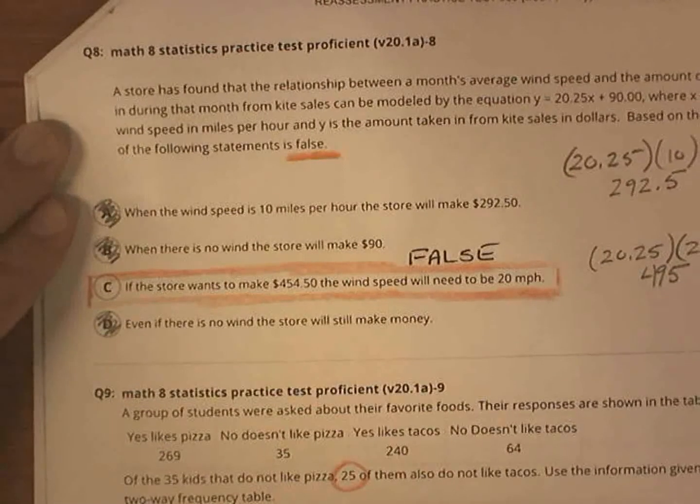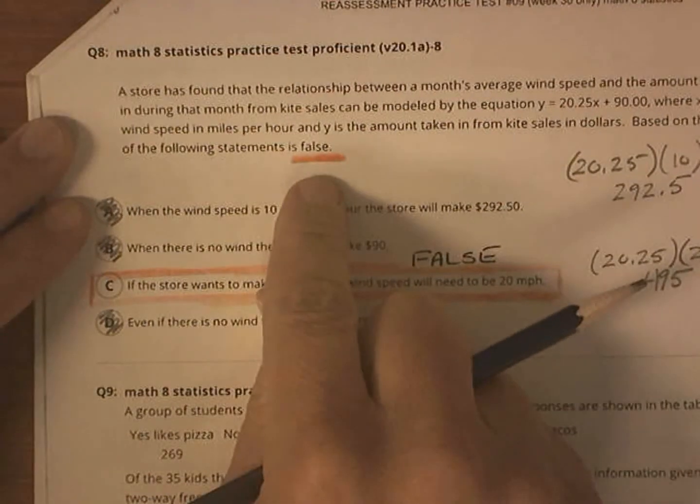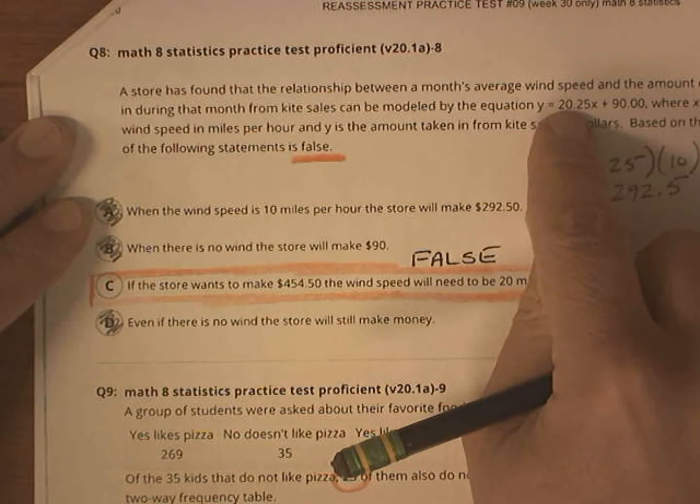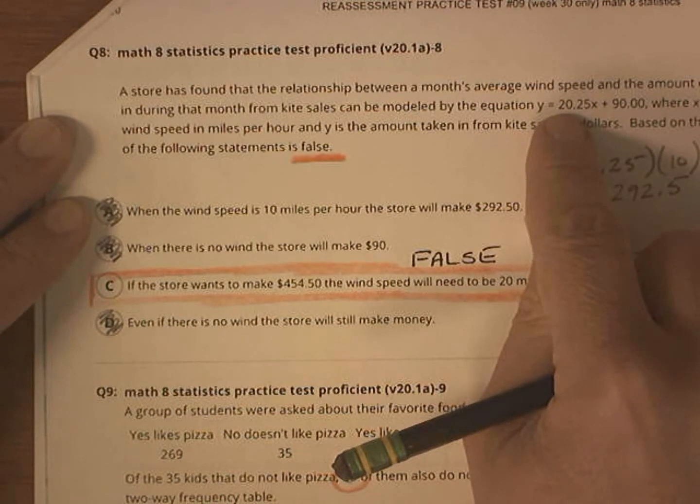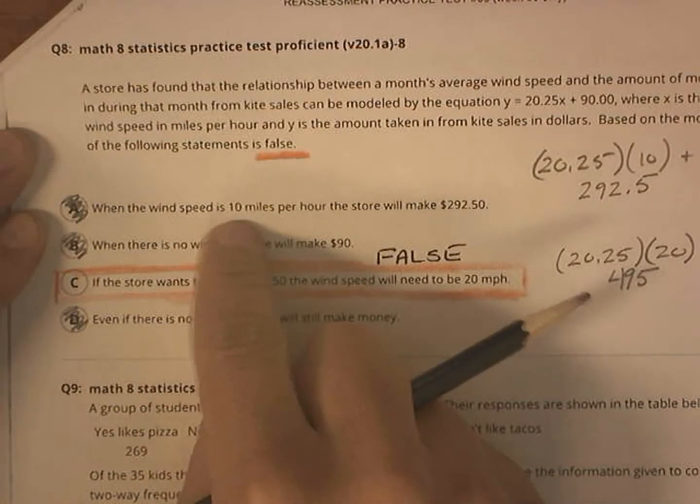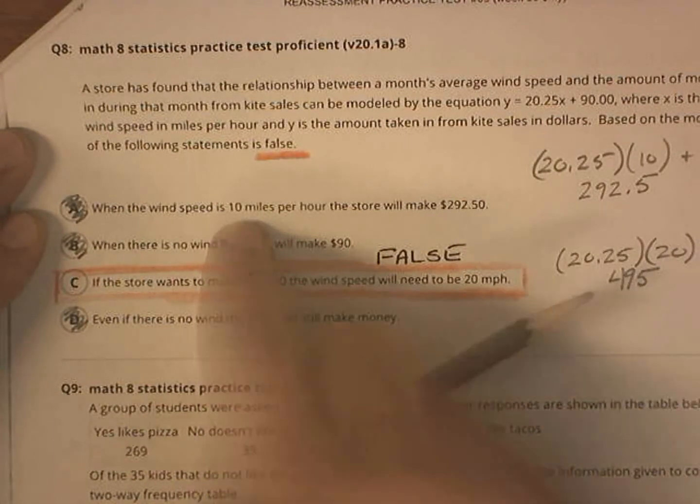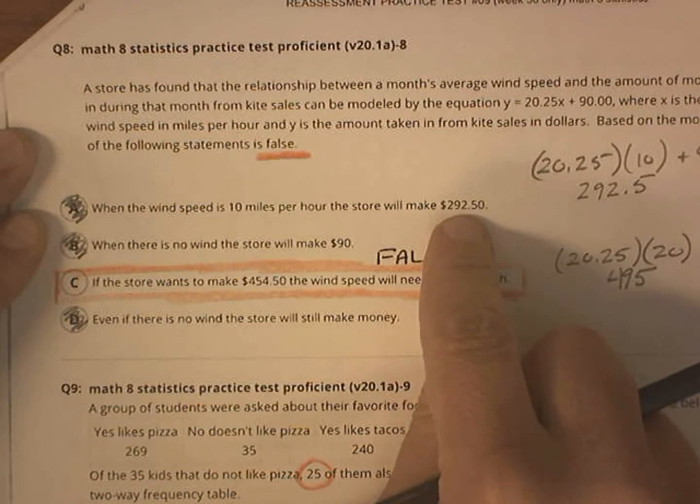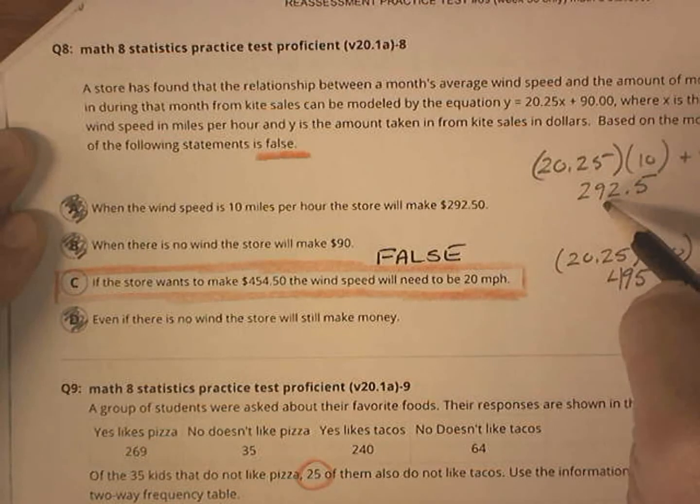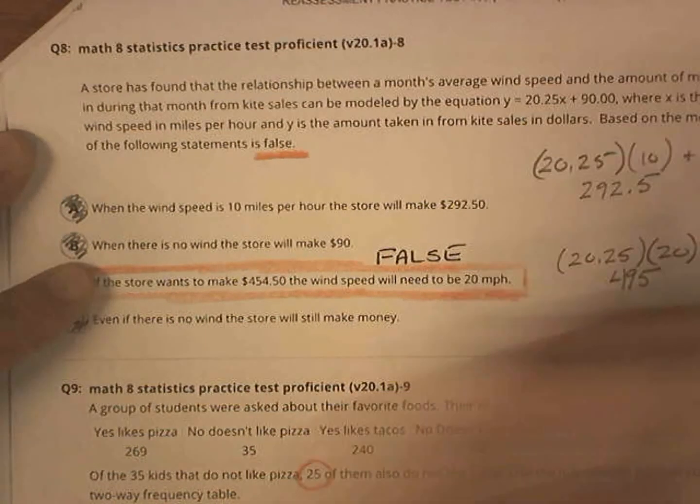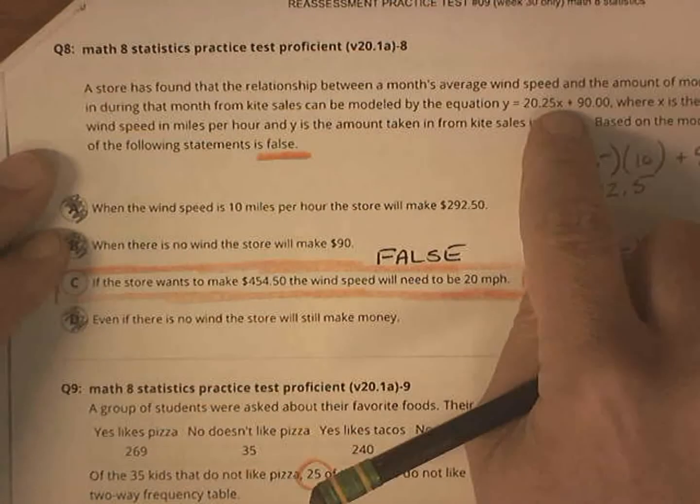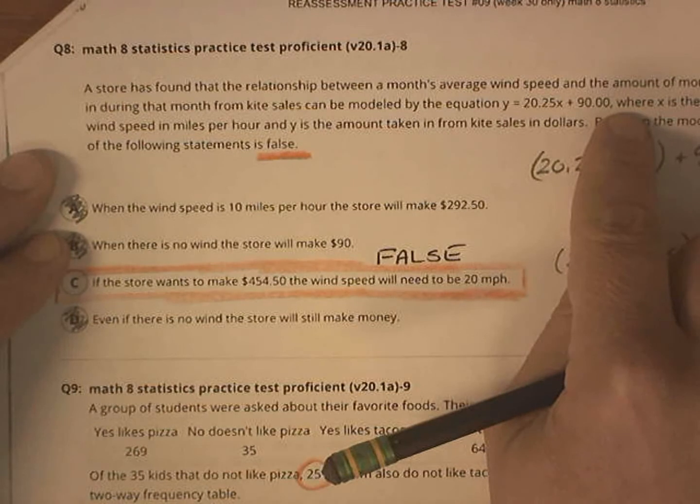This one I initially did incorrectly. It's saying, hey, which of the statements are false? So there's a relationship between the wind speed and the amount of money that a place is making on kite sales. And the equation is right here. So if the wind speed is 10 miles per hour, will I make that much? Yes, I will. If I plug in 10, out comes $292.50. When there is no wind, the store will make $90. That is true. Notice if I plug in zero, out comes 90. So that's true.